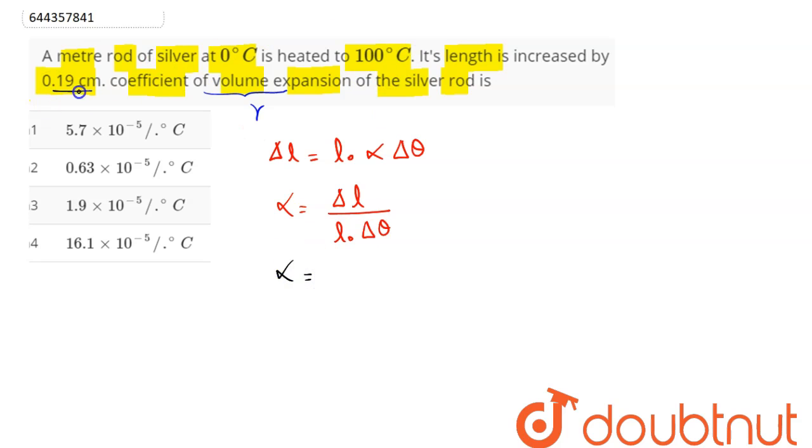centimeter, and Δθ here is 0 to 100, so change in temperature is 100. So α comes out as 19 × 10⁻⁶, which is equal to 1.9 × 10⁻⁵ per °C. But here it is asking gamma, which we know